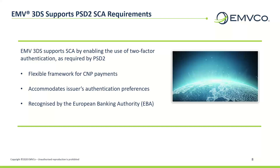The framework is flexible enough to allow merchants and issuers to accommodate their authentication preferences. Based on risk and applicable regulatory factors, issuers decide how the customer would be authenticated, for example using a one-time passcode, knowledge-based questions, biometrics, etc. Biometrics is facilitated through out-of-band authentication, which is an authentication process that utilizes a communication channel separate from the primary communication channel.